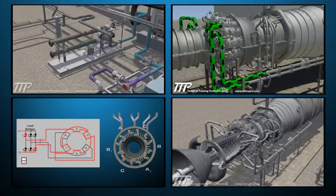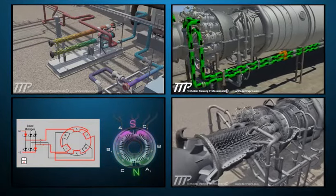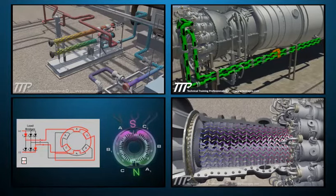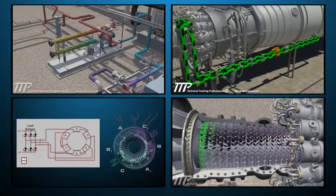The TTP 7FA Combustion Turbine course covers design, flow paths, function, and operation of the different sections of the turbine and generator.